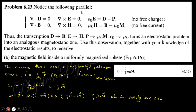Notice the following parallel: ∇·D = 0 and ∇·B = 0 — the first is electric, the second is magnetic. By analogy, the same form will be obtained as in the electrical configuration. For the magnetic field inside a uniformly magnetized sphere (equation 6.16): from electricity, equation 4.4 gives the electric field due to polarization. Analogically, the magnetic field H will have the same form, and since B = μ₀(H + M), substituting H gives the final equation.